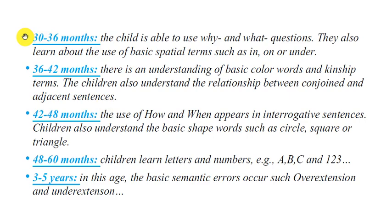At the age of 30 to 36 months, the child is able to use 'why' and 'what' questions, and also learns about basic spatial terms such as in, on, or under. At 36 to 42 months, there is an understanding of basic color words and kinship terms; children also understand the relationship between conjoint and adjacent sentences. At 42 to 48 months, 'how' and 'when' questions appear, and children understand basic shapes such as circle, square, or triangle. At 48 months, children begin to learn letters and numbers.